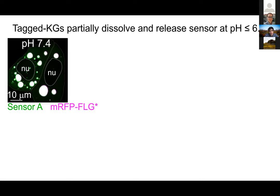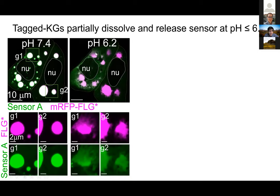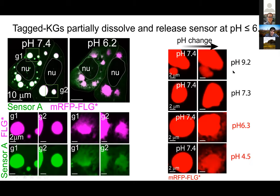Could filaggrin be optimized to sense a pH shift in the skin to then actuate the process of enucleation? We tested this first in vitro: cells co-expressing sensors and filaggrin at pH 7.4 show beautiful co-localization. But if we change the pH intracellularly in our experiment, we see a dramatic disassembly of the granules and ejection of filaggrin and sensors from within those granules in a pH-responsive manner. Specifically, playing with the pH range, we see this happening precisely at pH 6.3 — again the pKa of histidine. So it does seem that these granules are optimized for sensing pH.